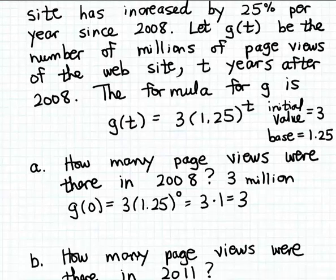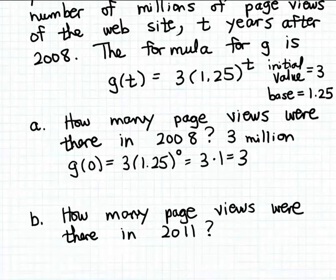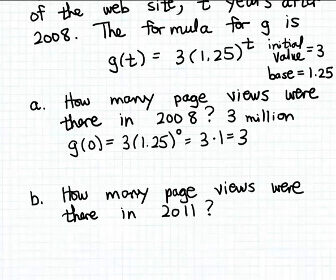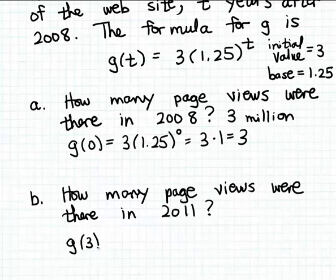Alright, let's try another evaluation. So in part B we want to calculate how many page views there were in 2011. 2011 is going to be three elapsed years after 2008, and so to answer this question we just have to evaluate g of 3.